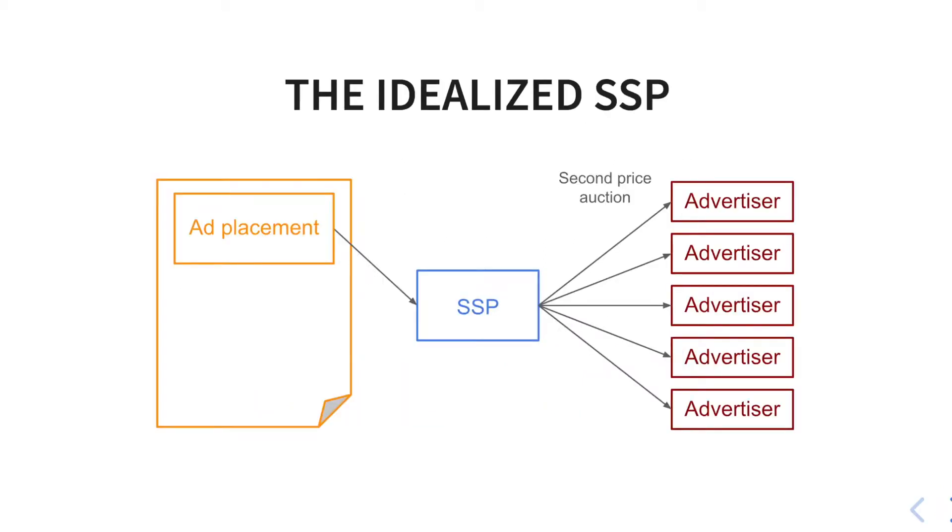As you may know, many ad placements on the web are sold in real time while your content is loading. Basically, a supply side platform or SSP is called by the page when you are loading it, and this SSP organizes an auction among several advertisers.